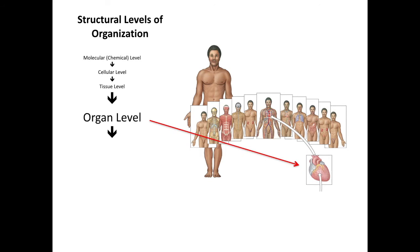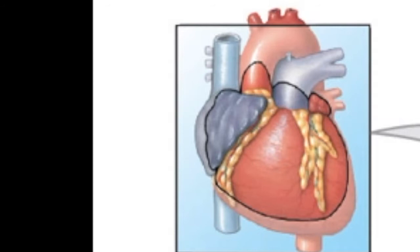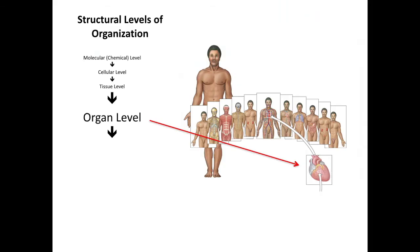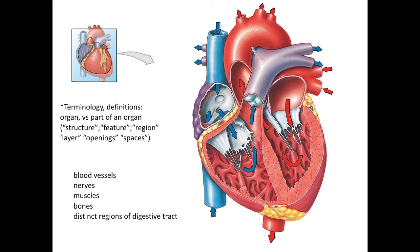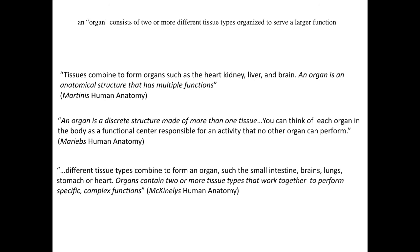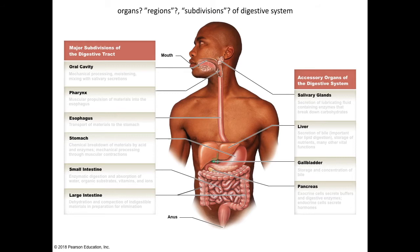Different tissues make up the next level of organization: the organ. Things like the heart, liver, brain, and stomach are all obvious organs — pretty distinct and performing a specific function. However, an individual muscle like your biceps brachii, an individual bone like your femur, named blood vessels like your jugular vein, and each of your named nerves like your vagus nerve are all considered individual organs. An organ consists of two or more different tissue types organized to serve a larger function. In the digestive system there are discrete structures like the gallbladder and pancreas, but the digestive tract itself is one continuous tube with different specialized regions — you may see these referred to as regions, subdivisions, or organs.